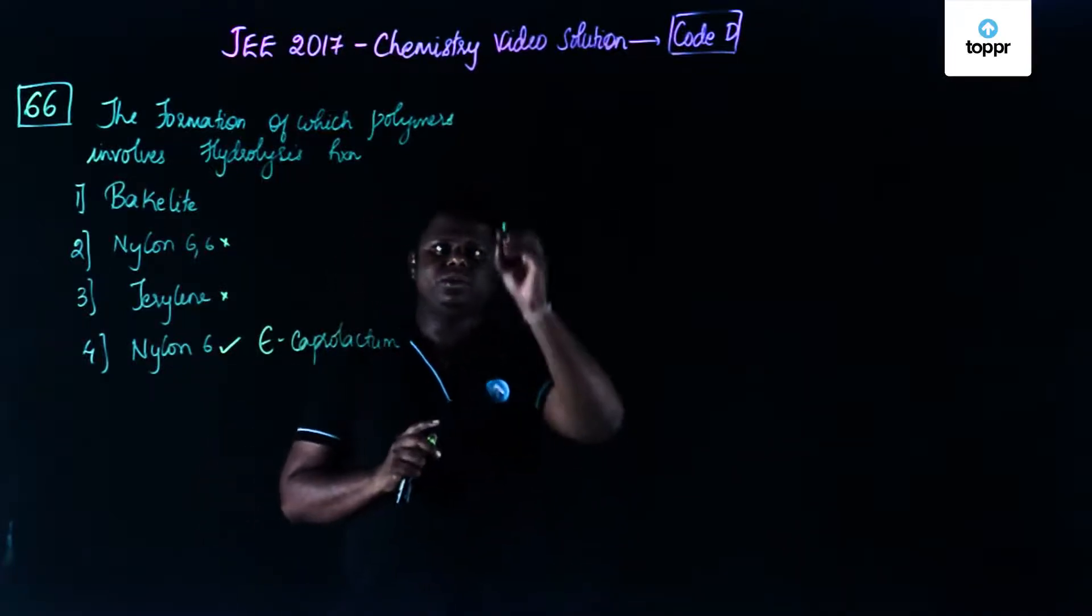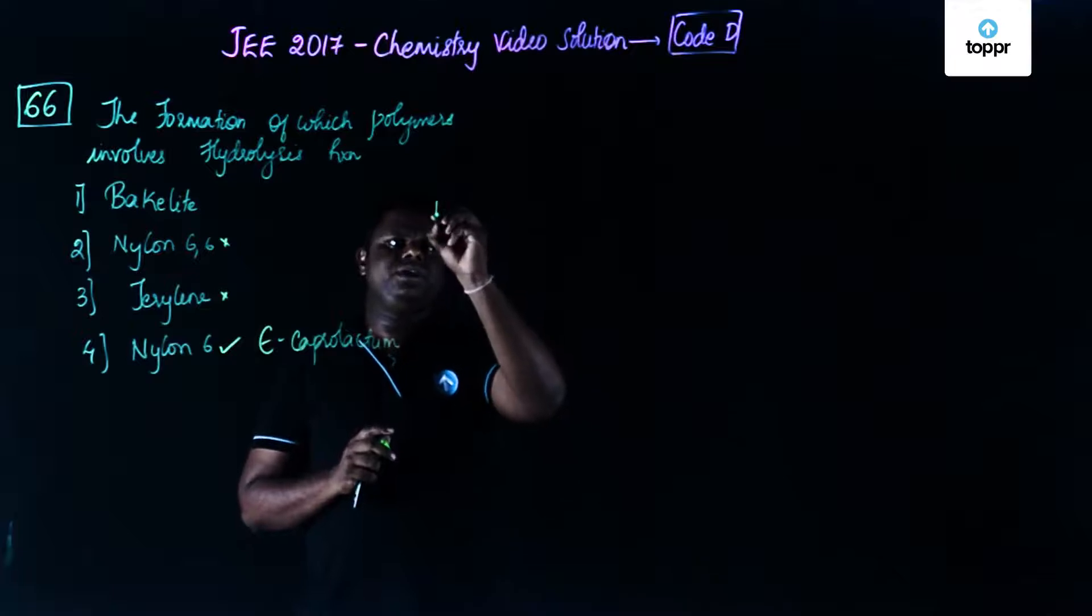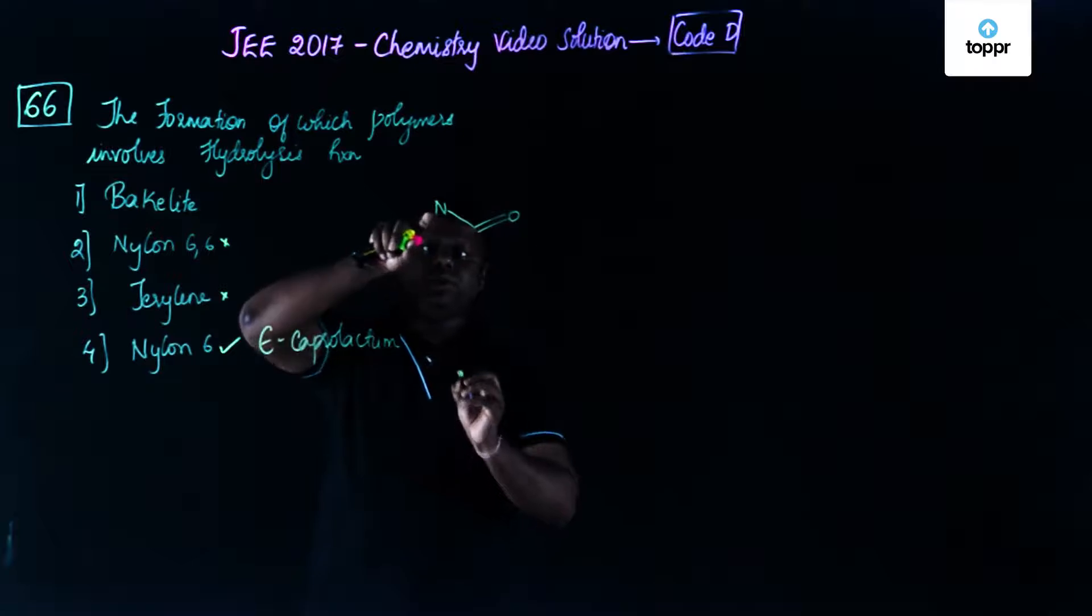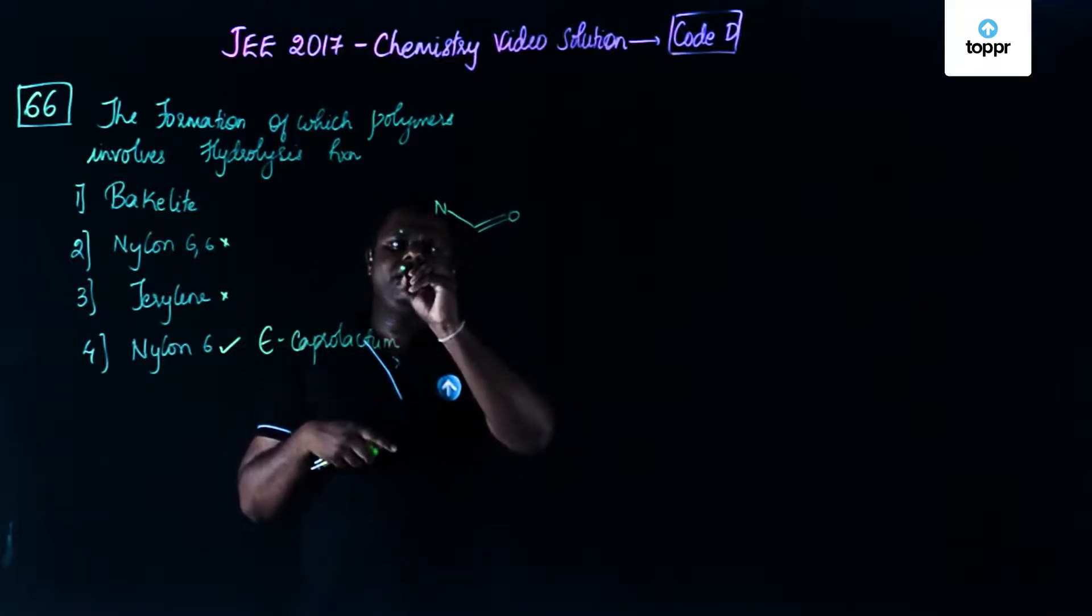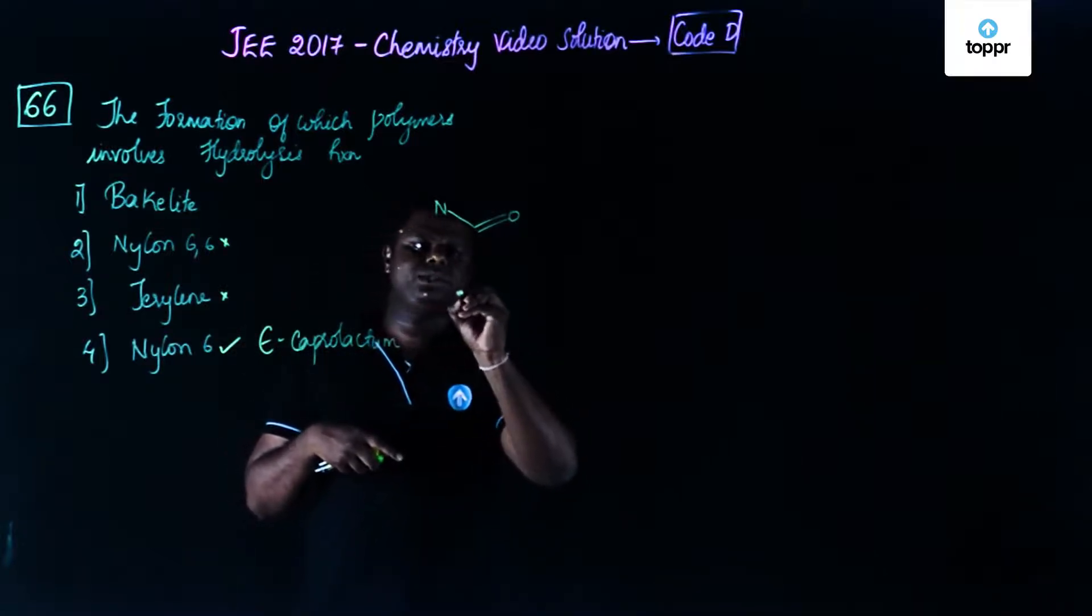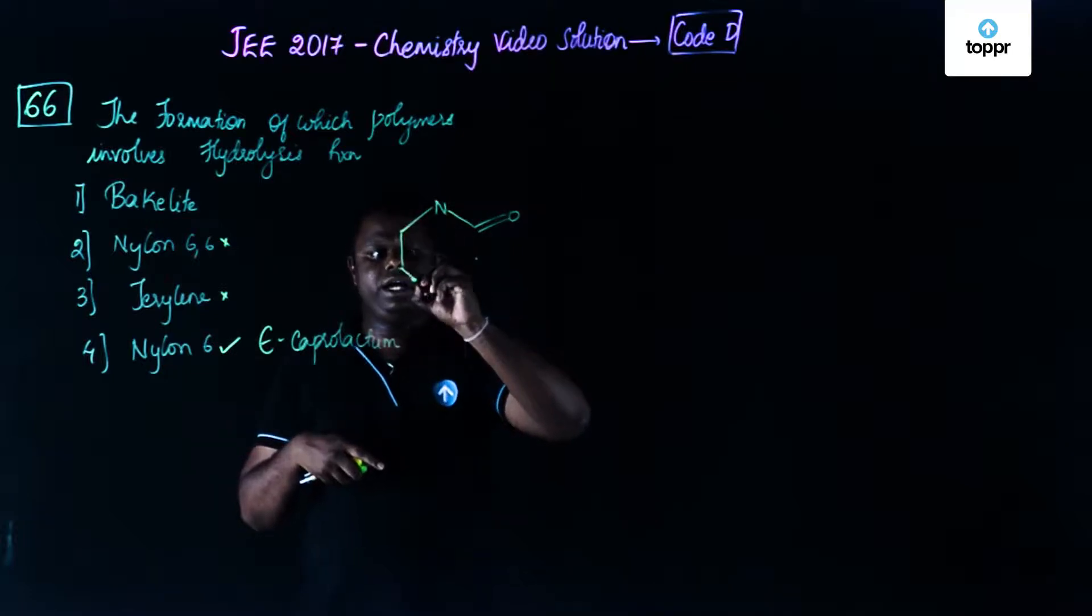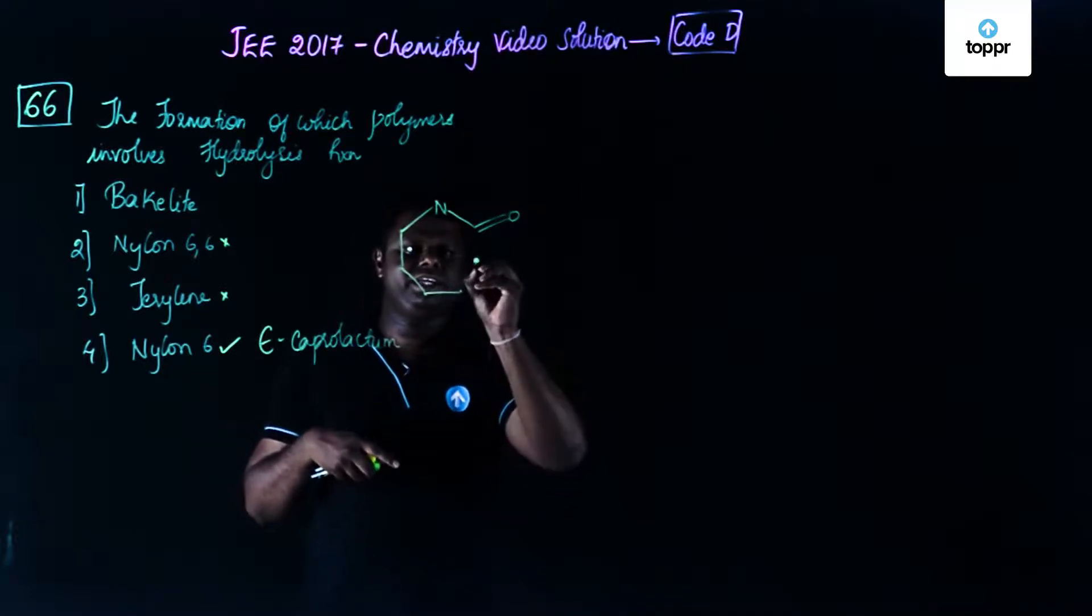So epsilon caprolactam, let me draw the structure first. I'm going to write N and I'm going to write a carbonyl group over here. It's a seven membered ring. So one, two, then I have the third one, then I have the fourth one, then I have fifth one, sixth one and seventh one. Now I'm going to connect each and everything together. So I would get a seven membered ring in this case.